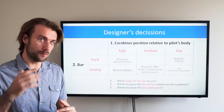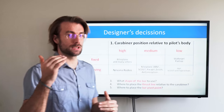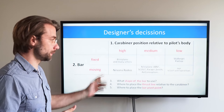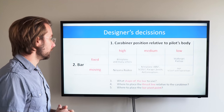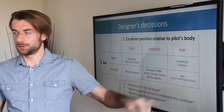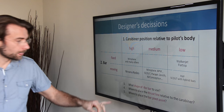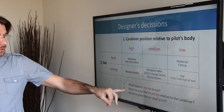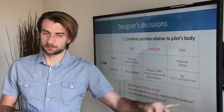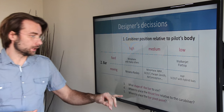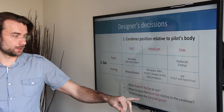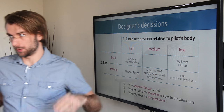There are a few more decisions that a paramotor designer needs to make regarding suspension: what shape of bar to use, where to place the thrust line relative to the carabiner, and where to place the bar pivot point.